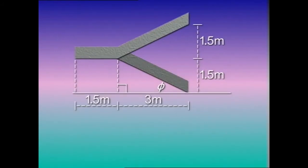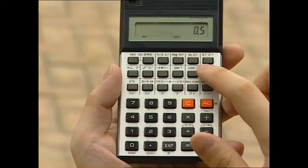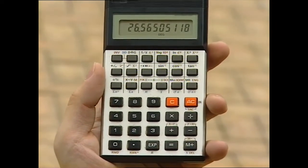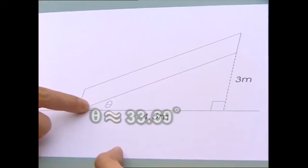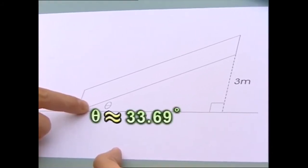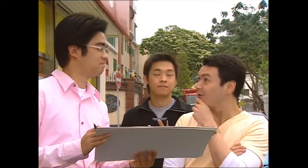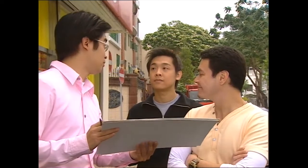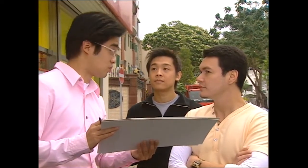In the second diagram, using a similar method, we obtain tangent phi equals 0.5. Using the calculator, our new angle is roughly 26.57 degrees. The angle of inclination in the first design is 33.69 degrees and this new angle is only 26.57 degrees — quite a difference.